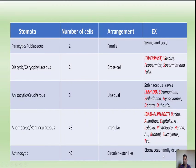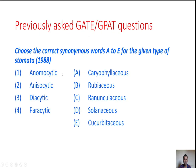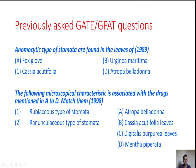Now let's look at previously asked GPAT questions. Question one: Match the correct synonymous names for given types of stomata. Anemocytic — ranunculaceous; anisocytic — solanaceous or cruciferous; diacytic — caryophyllaceous; parasitic — rubiaceous.